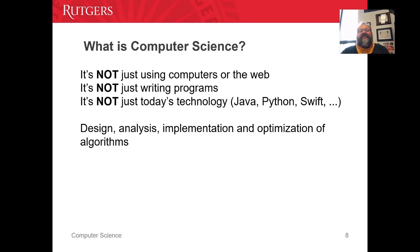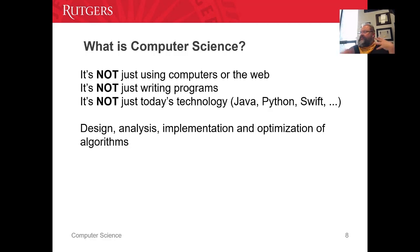Computer science is not just about using computers or using the World Wide Web. It's not just writing programs. And it's not about today's technology — Java, Python, Swift, Go, Kotlin, and so on.